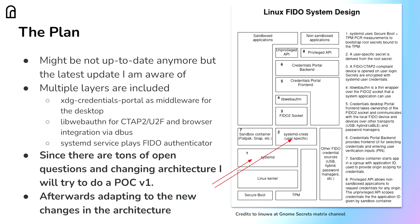There was a plan — I extracted this from the community. A guy from the GNOME Secrets community made a view of the overall architecture. It's probably still changing, but basically all of this is in there: the XDG credentials portal, libwebauthn providing an API to the authenticator, and the systemd service basically playing the role of a FIDO authenticator. So what is the YubiKey? It becomes systemd with the daemon.